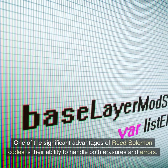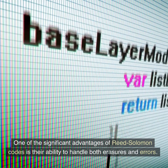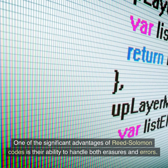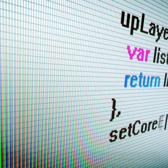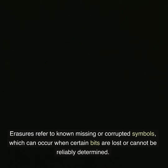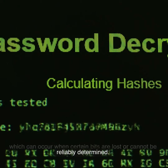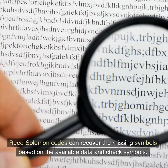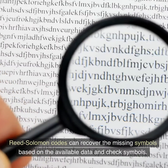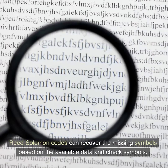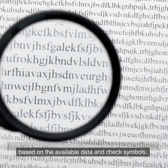One of the significant advantages of Reed-Solomon codes is their ability to handle both erasures and errors. Erasures refer to known missing or corrupted symbols, which can occur when certain bits are lost or cannot be reliably determined. Reed-Solomon codes can recover the missing symbols based on the available data and check symbols.